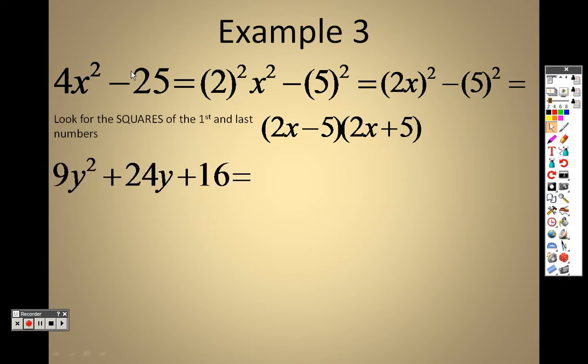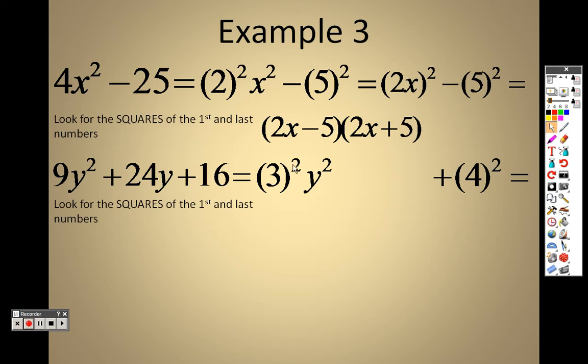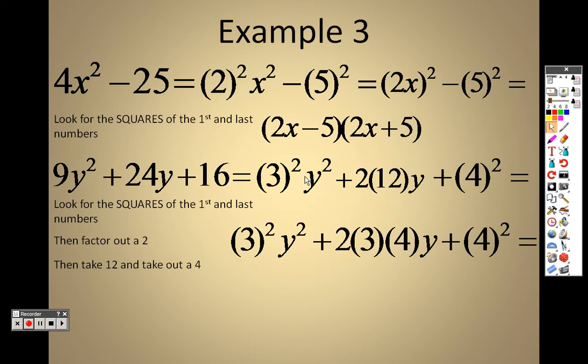So when I take a look at this, I take a look at the first term, and can I square that 9? You betcha. I can square the first and the last numbers. That is 3 squared and a y squared. The last term is a 4 squared. So can you take the first terms, multiply them together, and multiply it by a 2 to get 24? You got it. 3 times 4 times 2 is 24. So my first term is actually a 3y when I combine those together, and the last term is a 4.